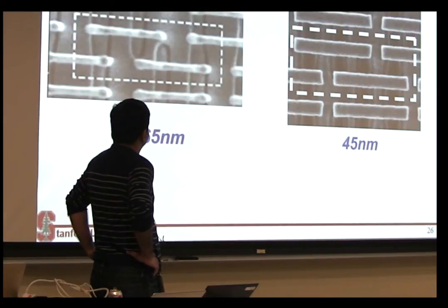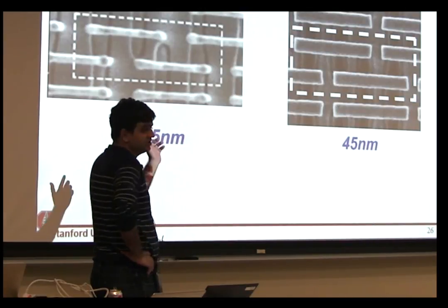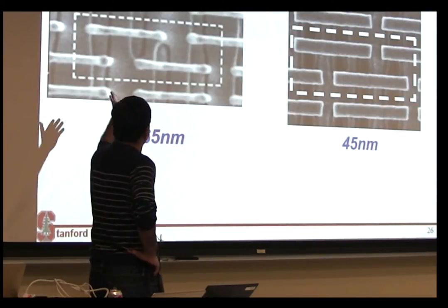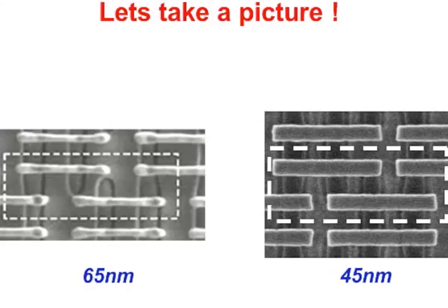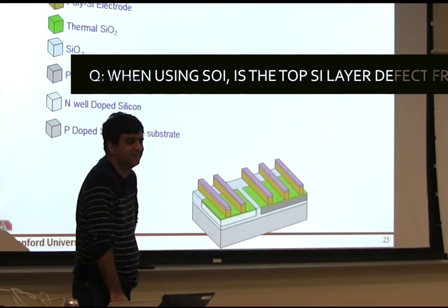And if you take a picture at this point in time, it looks something like this. So for a 65 nanometer process, it looked something like this. For a 45 nanometer, you can see the lines are in fact more rectangular, and you can see the corners even better.